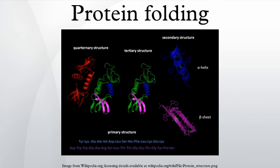Protein thermal stability is far from constant. For example, hyperthermophilic bacteria have been found that grow at temperatures as high as 122 degrees Celsius, which requires that their full complement of vital proteins and protein assemblies be stable at that temperature or above. A fully denatured protein lacks both tertiary and secondary structure and exists as a so-called random coil.